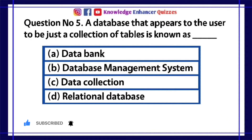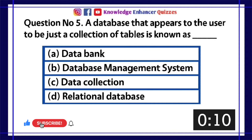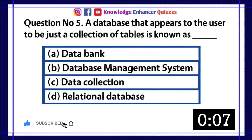Question number 5. A database that appears to the user to be just a collection of tables is known as dash. A. Data bank. B. Database management system. C. Data collection. D. Relational database.